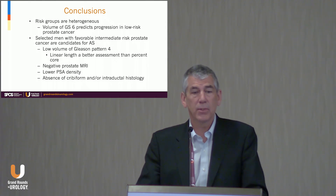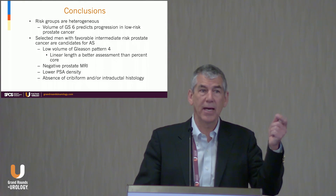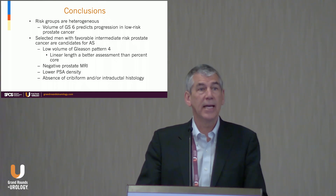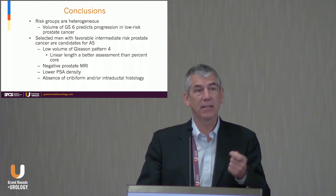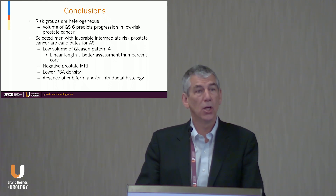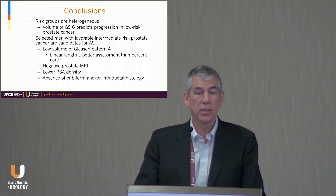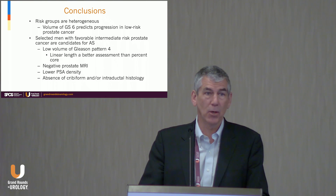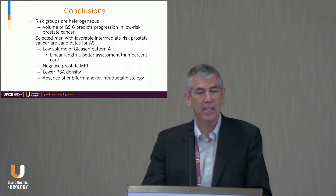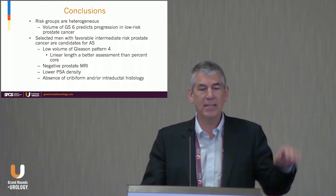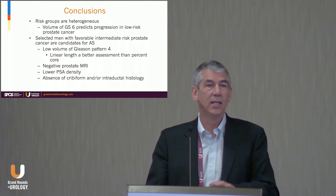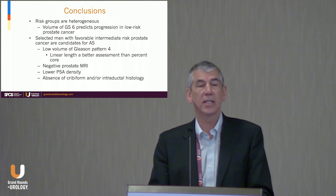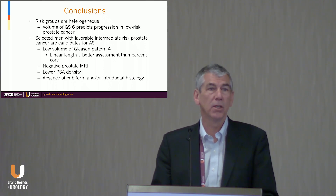In summary, risk groups are heterogeneous — within low, intermediate, and high there is a range of risk. Selected men, primarily those with low amounts of pattern 4 — where linear length is a better measure than percentage — are certainly considerations for active surveillance within intermediate risk. A negative MRI is better than a positive MRI, although a positive MRI does not preclude consideration. PSA density also comes into consideration, and cribriform and intraductal histology is a different beast — those patients are not considered appropriate for active surveillance due to much higher risk of progression. But certainly a portion of favorable intermediate risk patients should be considered for active surveillance.